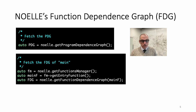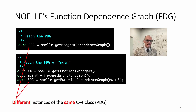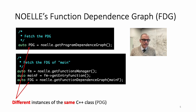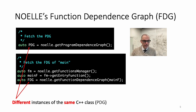Computing the function dependence graph is of course much faster, consumes less memory, and perhaps this is the only thing you care about — maybe it's the hottest function of the program and that's the only thing you want to optimize. The object returned is a different C++ object, but it is an instance of the same C++ class as the PDG object returned by the previous API. In other words, we have a single C++ class that we use to generate both the program dependence graph and the function dependence graph.